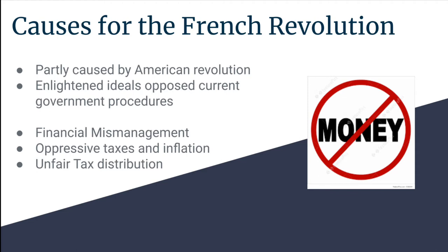Some short-term causes for the French Revolution were the financial mismanagement under the reign of Louis XVI. During his reign, France was nearly bankrupt. However, they could not declare bankruptcy, and so the only way to make money — with no central bank, no paper currency, and no means of creating credit — was to increase the taxes. He tried to increase the taxes on all classes. However, the clergy was exempt due to their status as being religious, and the nobility just flat-out refused to pay the tax, leaving more taxes to be placed on the peasantry. This is why the unfair tax distributions, oppressive taxes, and inflation are considered a short-term cause of the French Revolution.